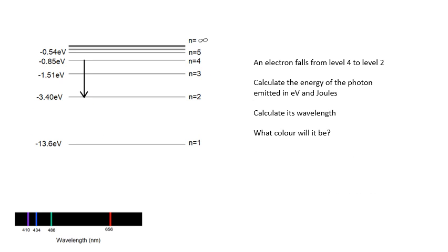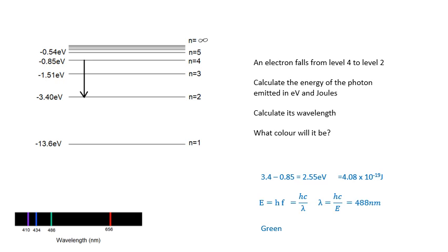Here's a very typical exam question — make sure you can do this. Get your pen, paper, and calculator and have a go yourself. The answer: level four to level two. The difference in energy is 2.55 electron volts, which is 4.08 times 10 to the minus 19 joules. For the wavelength, E equals hf where f is c over lambda. Rearranging, lambda equals hc over energy, which works out at 488 nanometres. Looking at the spectrum, that's the green line — hydrogen beta at 486 nm.